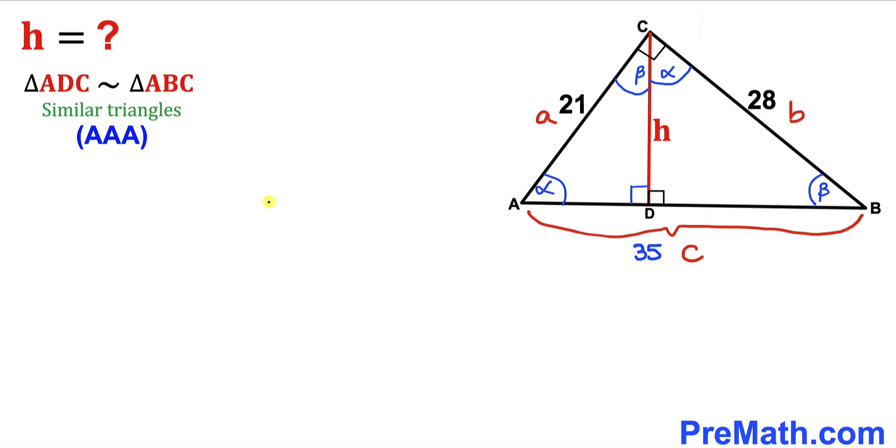So therefore we are going to have a proportion. In other words, we are going to have the ratio of the opposite side of angle alpha, which is H, divided by the side opposite to this 90 degree angle, which is side a. Now let's focus on this big triangle ABC. The opposite side of alpha is b, divided by the opposite side of this 90 degrees, which is side c.